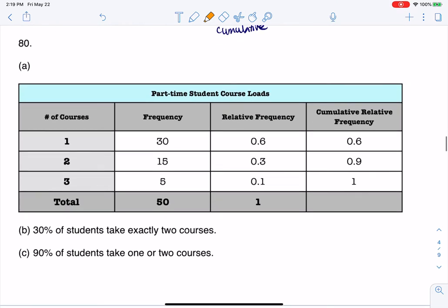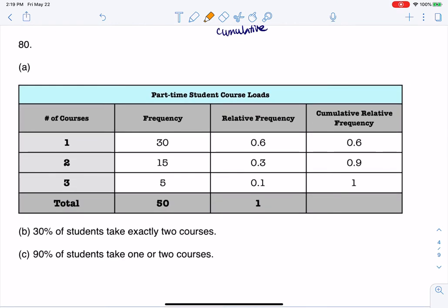So I wrote these answers up, and you can see them popping up in my table. You see the 5 is put here, you see my relative frequency of 30% and 10%, and then you see me creating the cumulative relative frequency totals. And then I'm answering part B, saying 30% of students are taking exactly two courses, and 90% of students are taking one or two courses. Alright, so there's number 80. Thanks so much everyone. Bye.